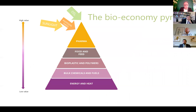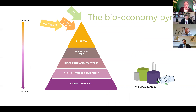Another useful perspective is the bioeconomy pyramid, which shows how products from waste can be turned into high or low value items. From the viewpoint of the Magic Factory outside Tønsberg, producing biogas as bulk fuel is good. But producing digestate for greenhouses and agriculture means serving food and feed production, which is worth more than the biogas.